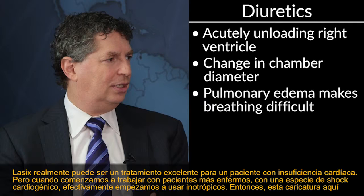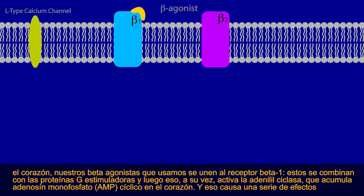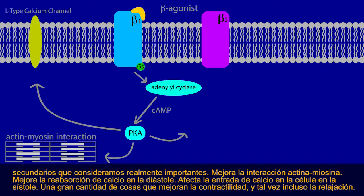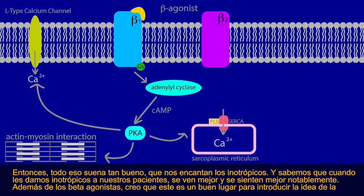For sicker cardiogenic shock patients, we really start to use inotropes. Beta agonists used in the heart bind to beta-1 receptors coupled to stimulatory G proteins, activating adenylyl cyclase, which builds up cyclic AMP. This improves actin-myosin interaction, improves calcium reuptake in diastole, affects calcium entry in systole — making contractility and possibly relaxation better. So we love inotropes, and when we give them acutely, patients look and feel better.